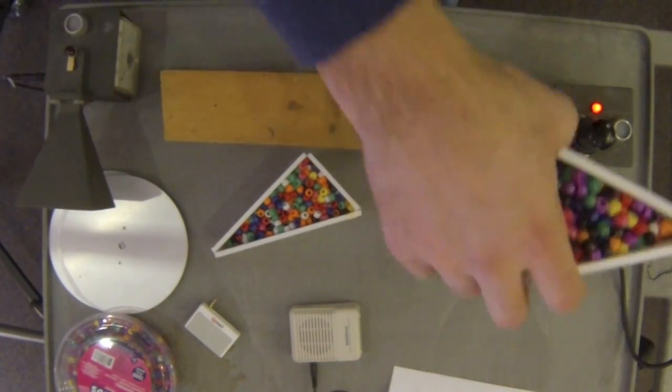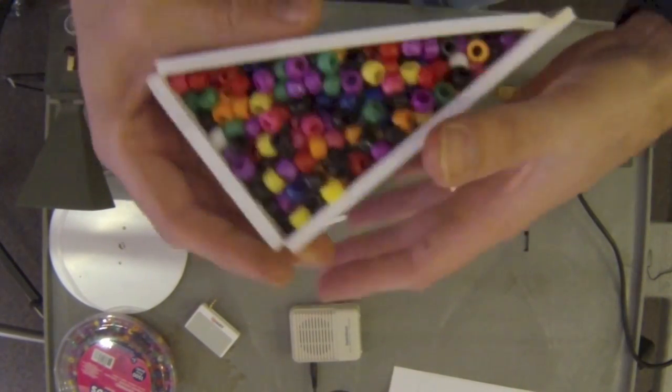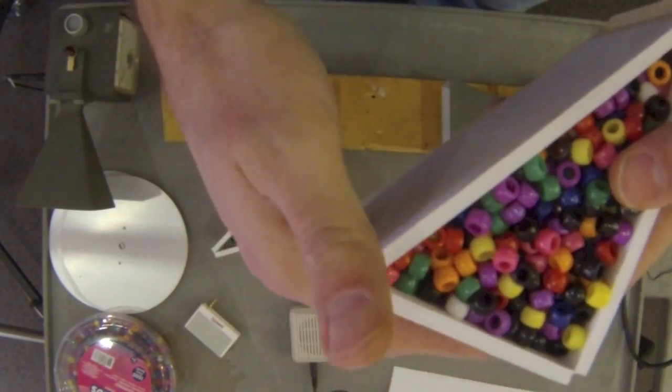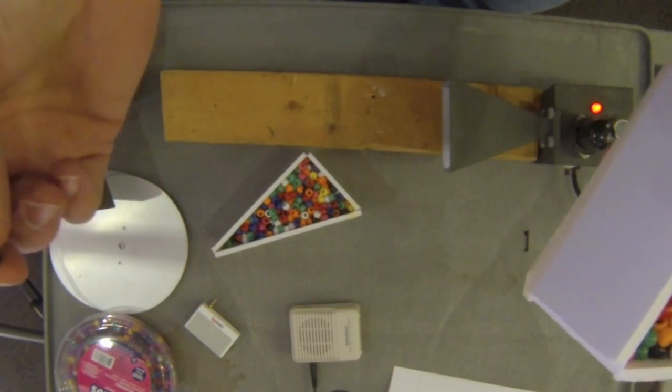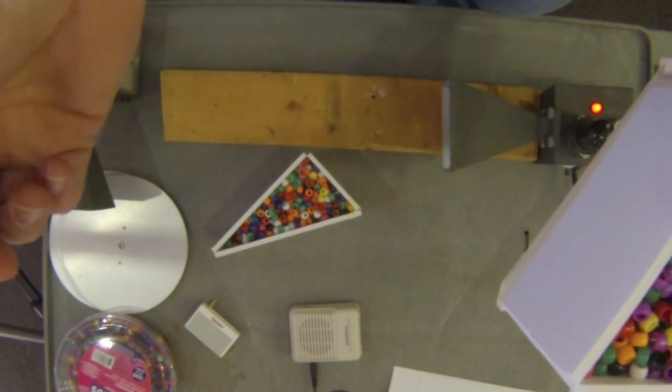And then I have this, which is made from some foam board, which is lightweight and doesn't really affect the microwaves very much. It is filled with these pony beads. Why do they call them pony beads? Does anybody know? No. Okay.